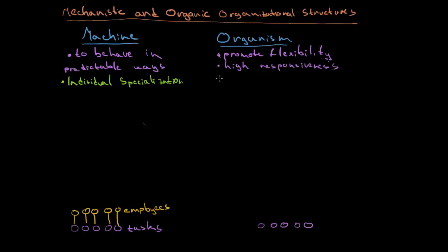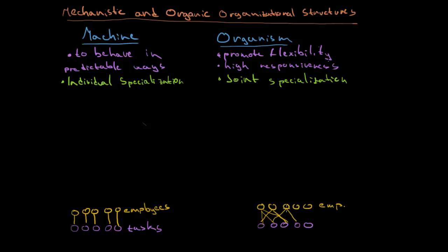On the other hand, in the organic structure we have joint specialization. We again have five employees, and they are jointly attached so that these employees solve multiple tasks together — maybe working in teams for different tasks. As you can see, the picture looks a bit messy, and that is joint specialization, where employees work together and coordinate.